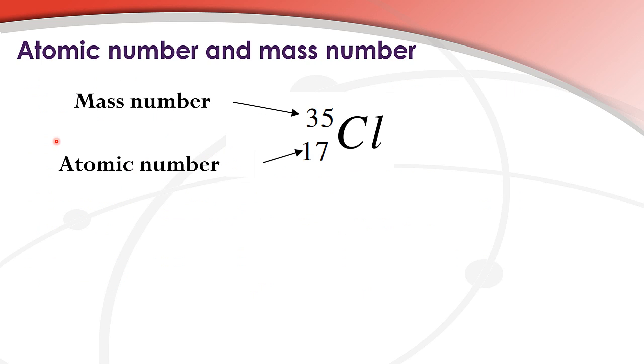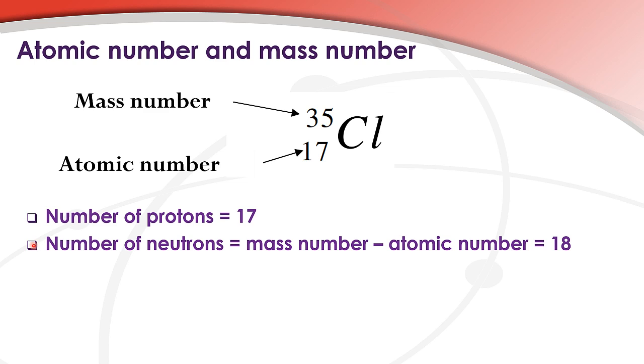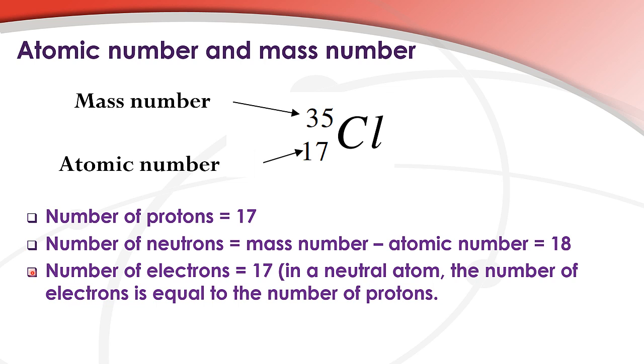Let's look at an example. Here we have chlorine. The mass number is 35, the atomic number is 17. So the number of protons equals 17, the same as the atomic number. The number of neutrons equals the mass number minus the atomic number. So it's 35 minus 17, and that's 18 neutrons. The number of electrons equals 17. In a neutral atom, the number of electrons is equal to the number of protons.